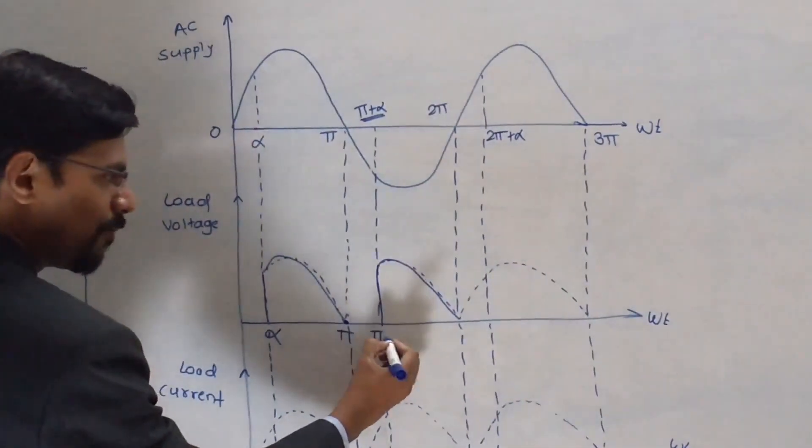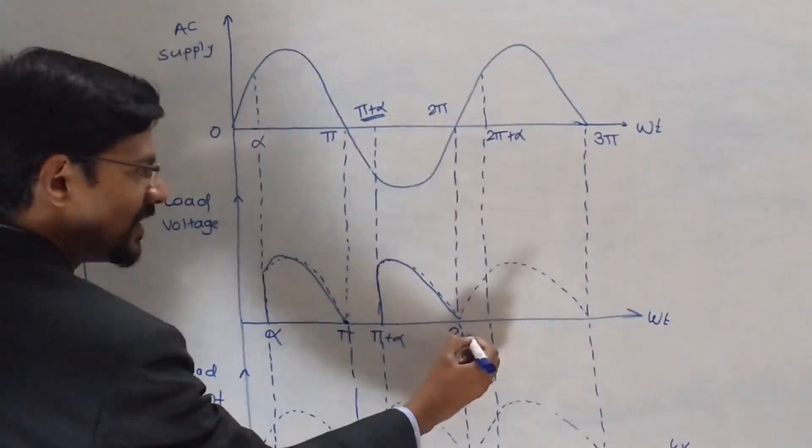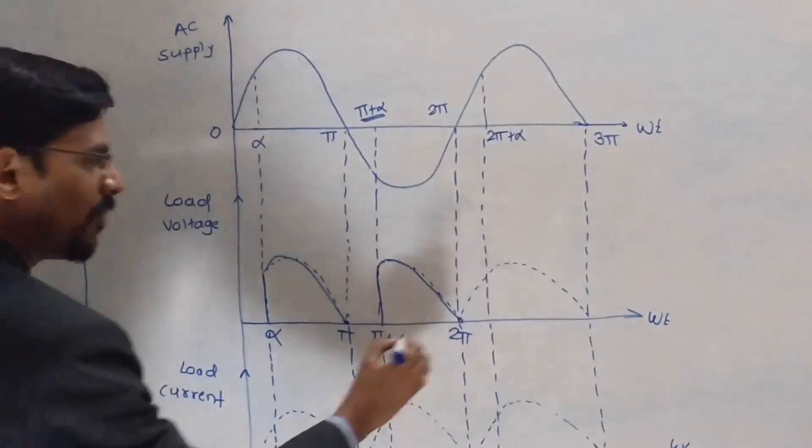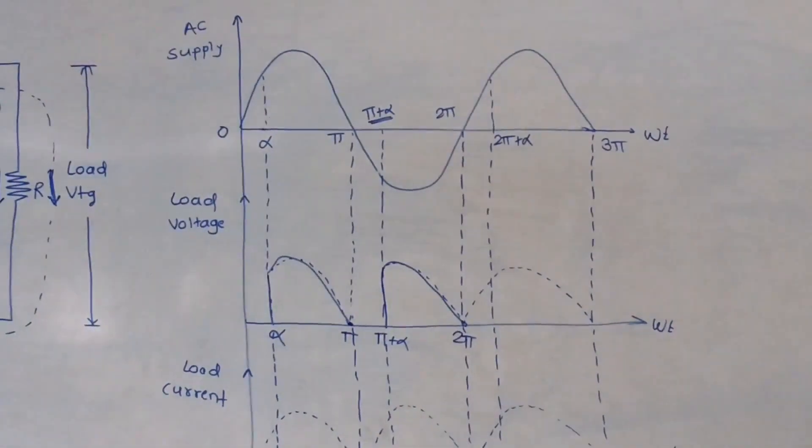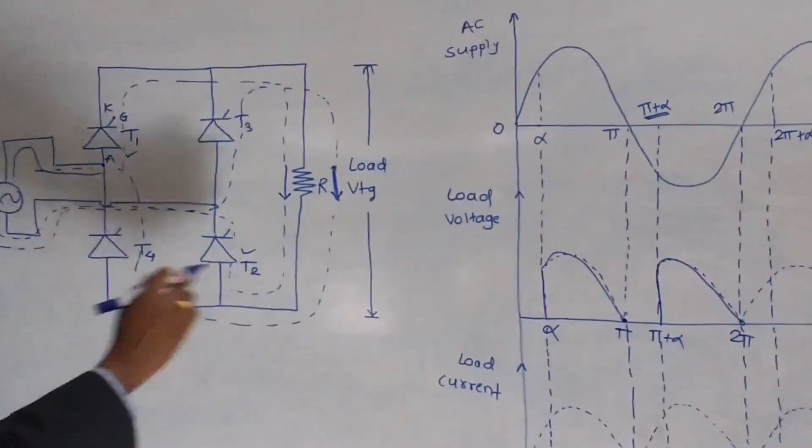So you can write here pi plus alpha. Up to 2 pi, you will get the same waveform. And at 2 pi, thyristors T3 and T4 are going to be commutated because of natural commutation. And for this third half cycle.